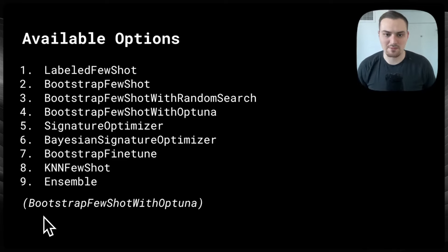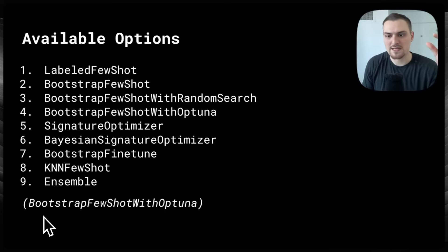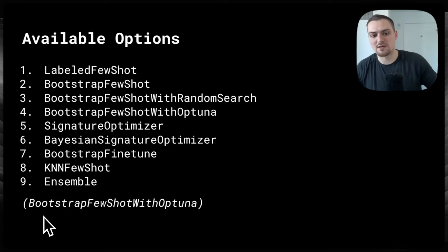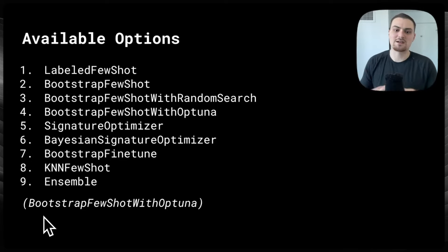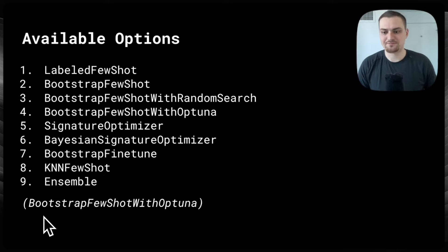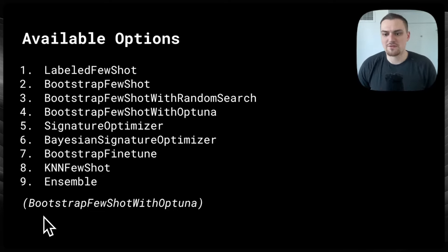The signature optimizer is going to use another LLM to write paraphrasings of the initial task you give it, and then search for how well that does with performance. The Bayesian signature optimizer is the heavy hitter right now — it jointly uses Bayesian optimization, few-shot example search, and task search. Bootstrap fine-tune is where you're fine-tuning with gradients using synthetic input-output examples. We'll save deeper dives on those for a future video.